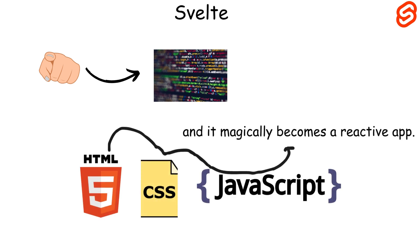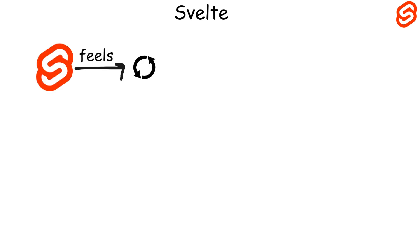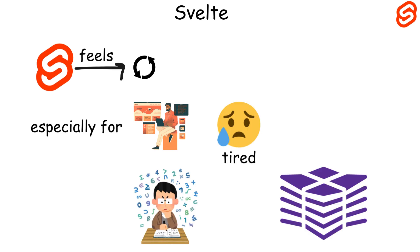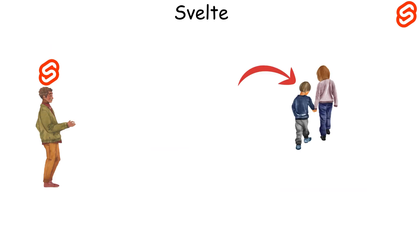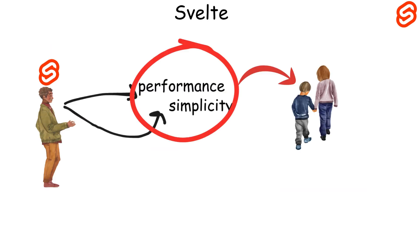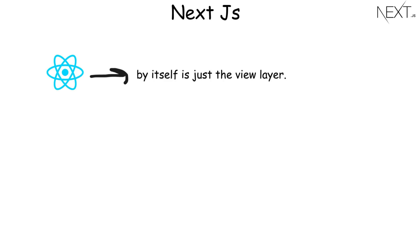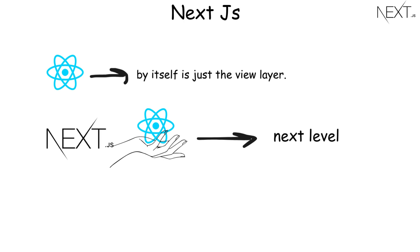Svelte feels refreshing, especially for developers tired of huge bundles and complex setups. It's young, but its performance and simplicity make it a strong contender for the future of front-end development. React by itself is just the view layer, but Next.js takes React to the next level — it's a framework built on top of React that adds server-side rendering, static site generation, and powerful routing.